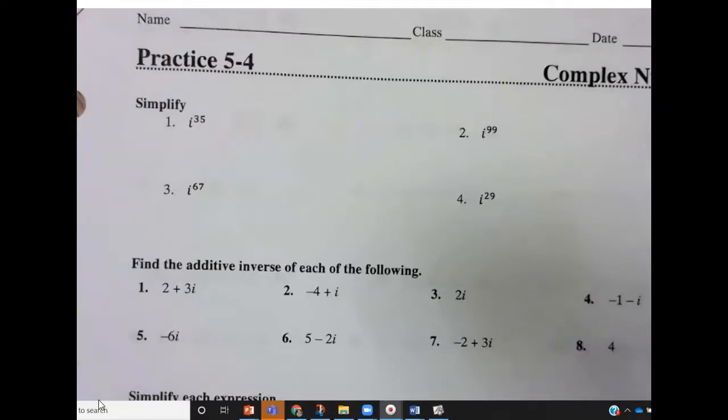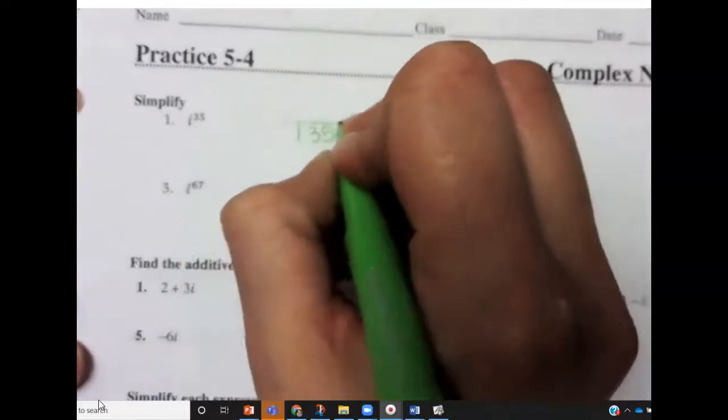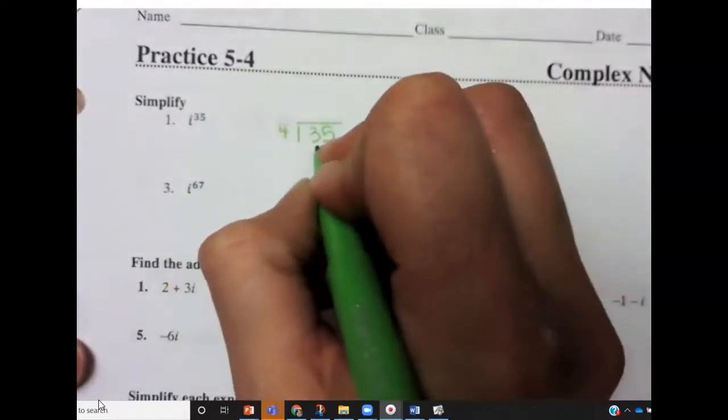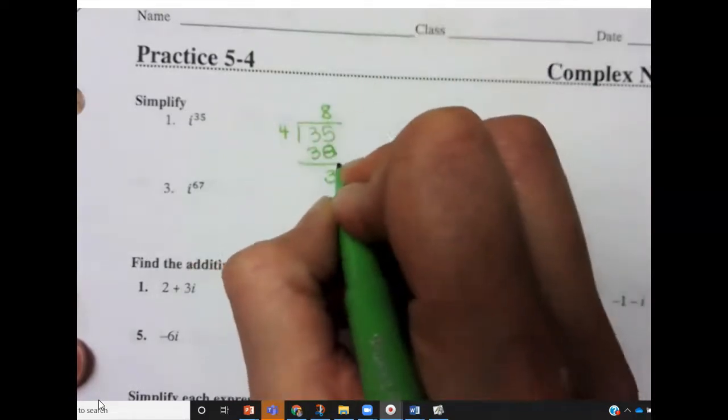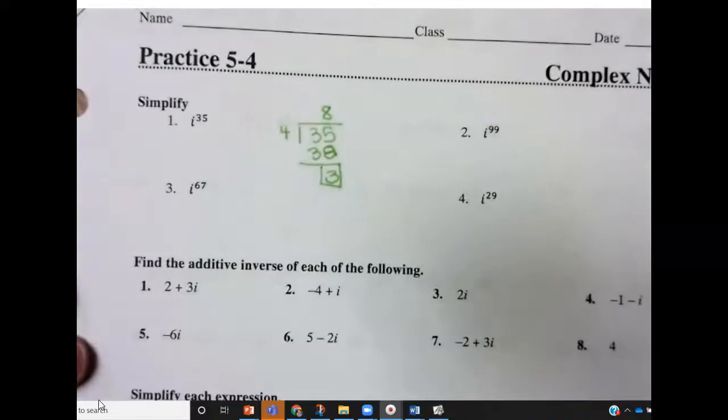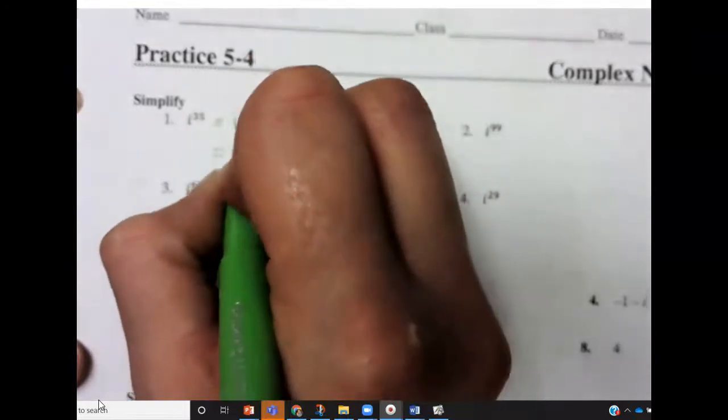So 35 divided by 4 gives you a remainder of 3 because it's 8, so you get 32 remainder 3. That means that i to the 35 is really like i cubed, which is really negative i.